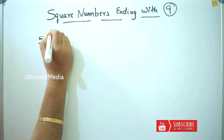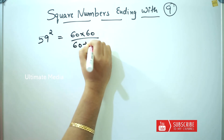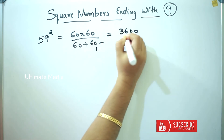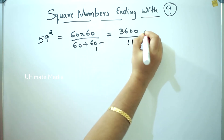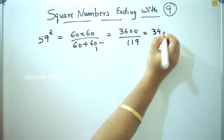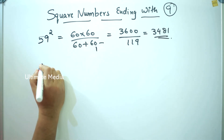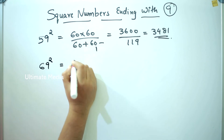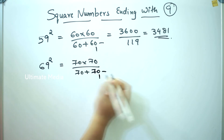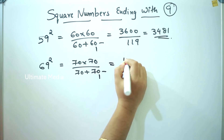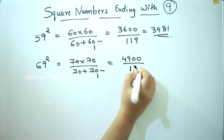Next, 59 square. 60 into 60, by 60 plus 60, minus 1. 3600 by 120 minus 1 = 119. The answer is 3481. So 59 square is 3481. Next, 69 square. 70 into 70, by 70 plus 70, minus 1 = 139. The answer is 4761.